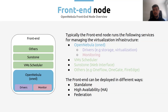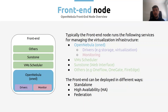We also provide another set of services which usually run on the same node, but again can be deployed on a different one. The front-end node itself can be deployed in different ways. The most simple is standalone — you just deploy one front-end node. The problem is when you need more reliability: if this front-end falls down for whatever reason, you will lose access to manage your VMs. So if you need more reliability, you can deploy your front-end in a high availability manner, which ensures the availability of the front-end.